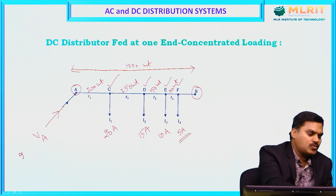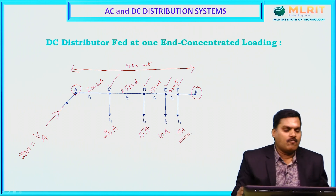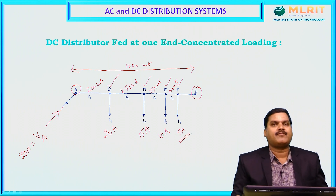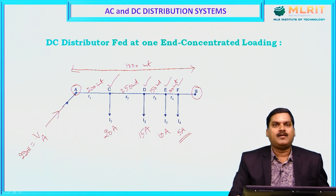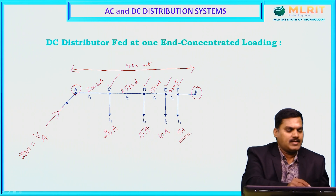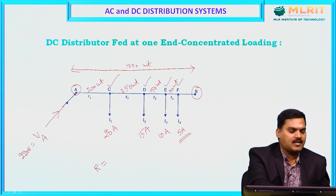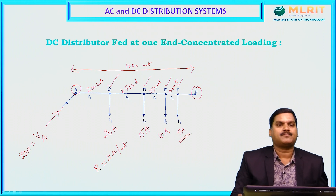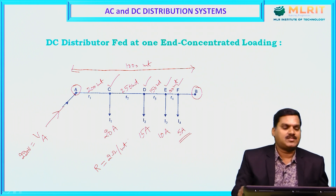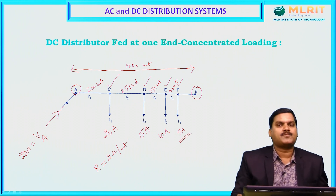Suppose Va is 220 volts. We need to calculate voltage at F, voltage at E, voltage at B, and so on. For all these things, we need to know the resistance of the conductor — suppose 2 ohms per meter. This data is also needed to calculate the different voltage drops in this distributor.